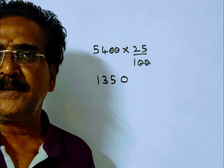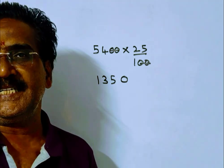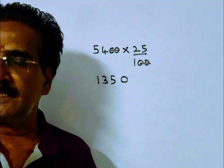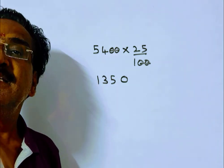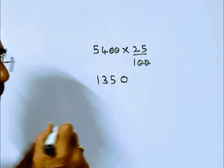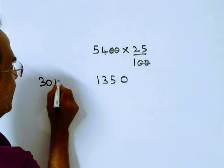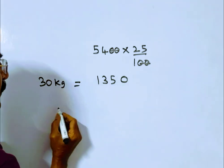Because of this reduction, a man gets 30 kg more rice. That means this 1350 rupees must be the reduced price of 30 kg of rice. So 30 kg equals 1350 rupees.